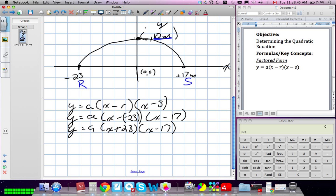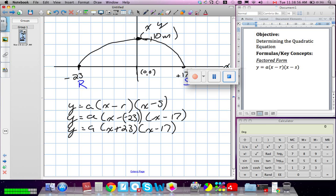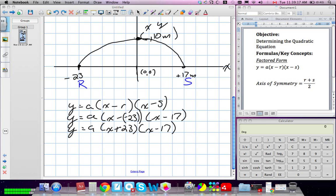To find the x coordinate is also known as the axis of symmetry. So, we need to use our axis of symmetry formula, which is a formula we just put up here. Our axis of symmetry is equal to R plus S divided by 2. So, we're going to do it as a side calculation. R plus S divided by 2 will give us our axis of symmetry. That's going to give us negative 6 divided by 2, which is negative 3.